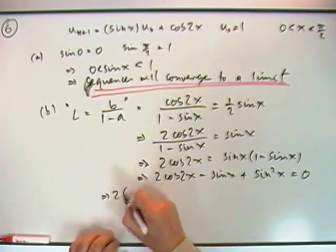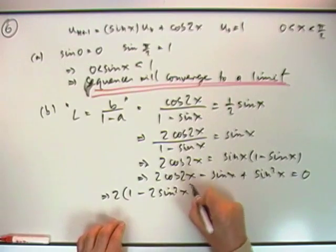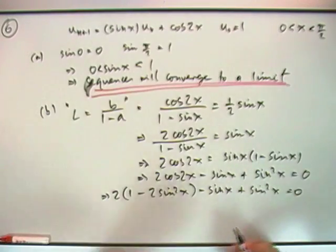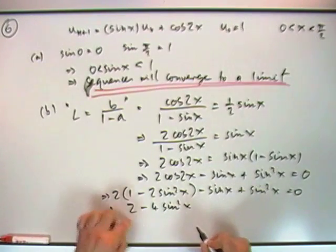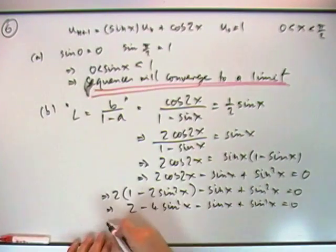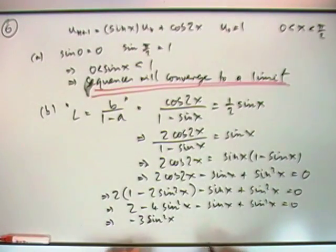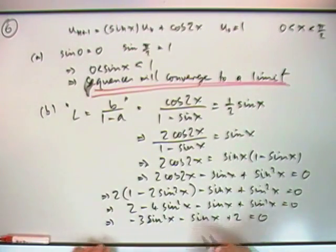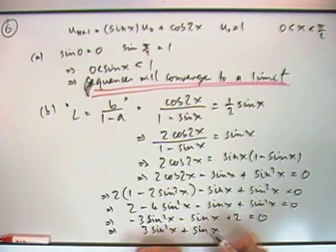You can see where that's going. It's going to be a quadratic in sine x. To show that, I've got 2 lots of this though. So I've got 2 lots of the cos 2x. Using the form for cos 2x would be 1 minus 2 sine squared x. Minus the sine x plus sine squared x equals 0. I've got 2 minus 4 sine squared x minus sine x plus sine squared x equals 0. So altogether, I've got negative 3 sine squared x minus sine x plus 2 equals 0.